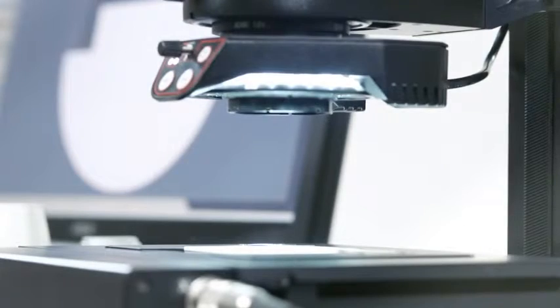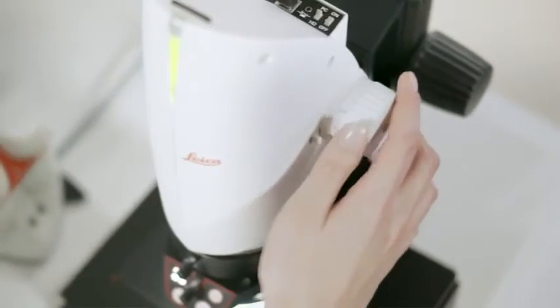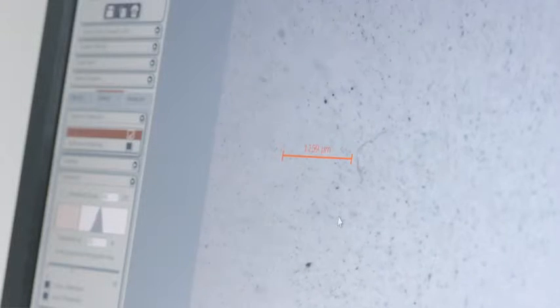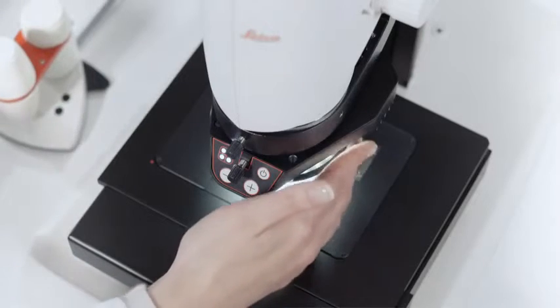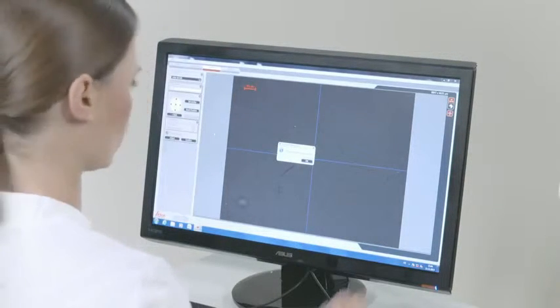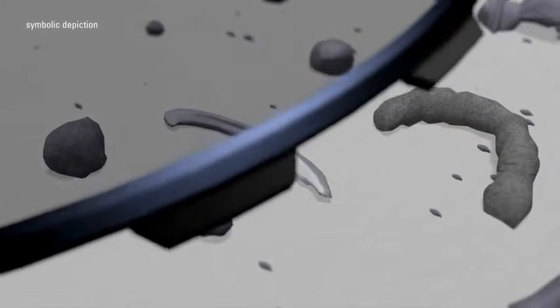The Leica DMS 1000 features an encoded zoom for exact reproducibility of measurements. And it can distinguish between reflective and non-reflective particles, a necessity in many cleanliness inspections.